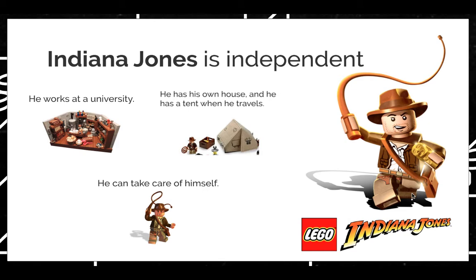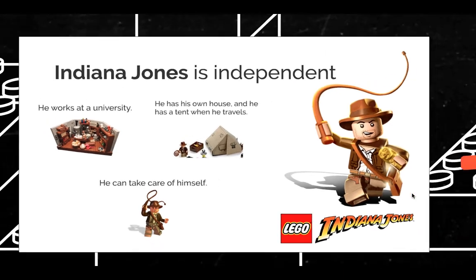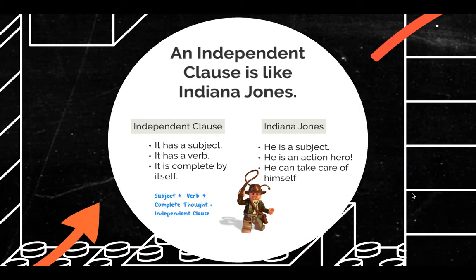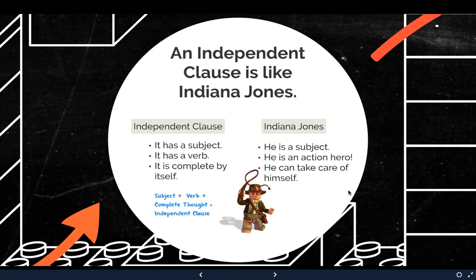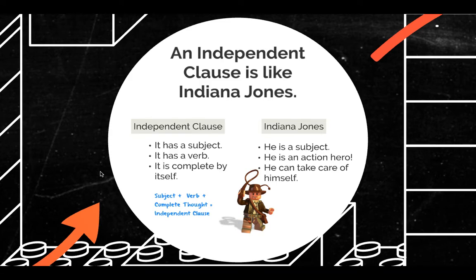So that helps us remember what the word independent means. An independent clause is like Indiana Jones. Indiana Jones is a person — a subject — he is an action hero, he can take care of himself. Independent clauses have a subject, they have a verb or an action, and they are complete by themselves. So thinking of Indiana Jones helps me remember what an independent clause is: a subject, a verb, and a complete thought — that is an independent clause. It's a sentence by itself.